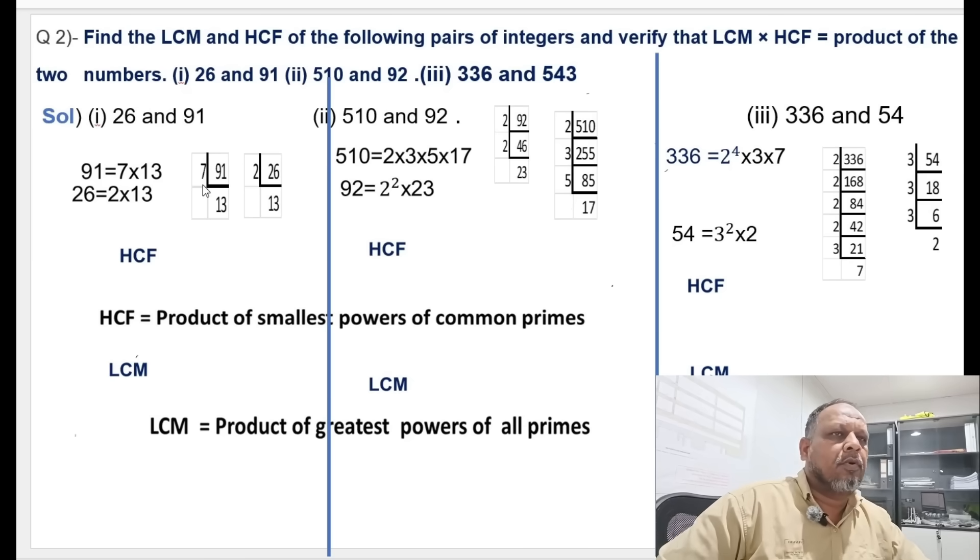This is the second problem we are going to solve now. The question is: find the LCM and HCF of the following pairs of integers and verify that LCM multiplied by HCF equals to the product of the two numbers.